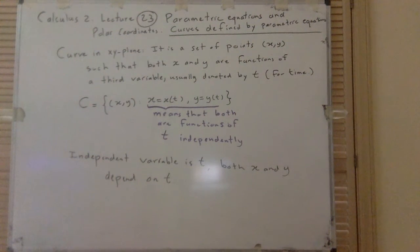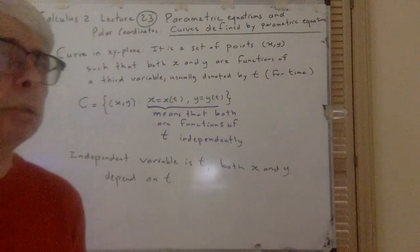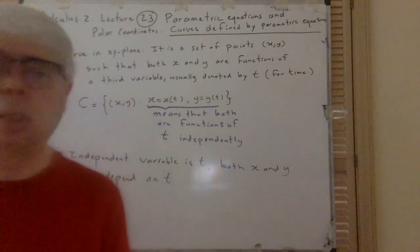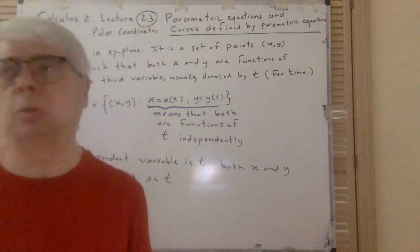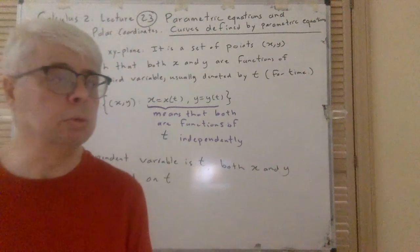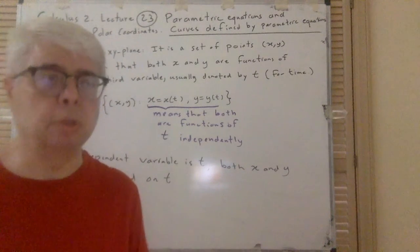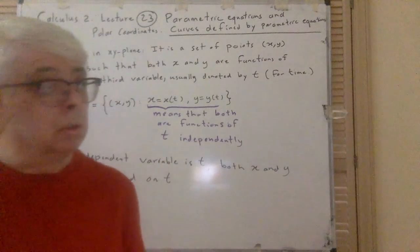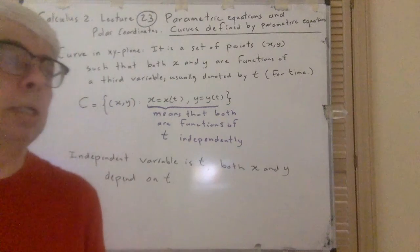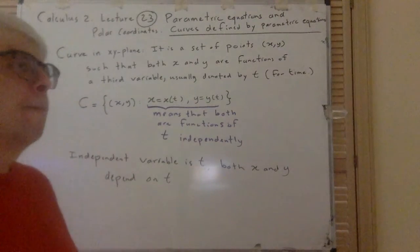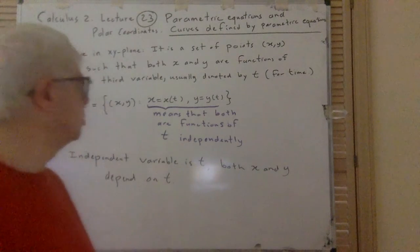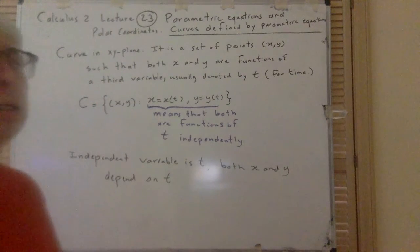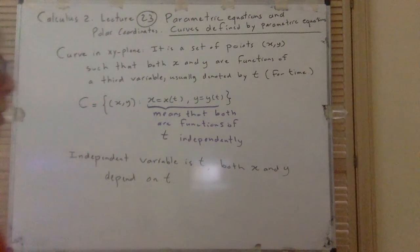CAP 2 lecture 23: parametric equations and polar coordinates. The first section is curves defined by parametric equations. Until now, when we talked about curves — even from college algebra — everybody has some idea. You could draw a circle, for example. But we really did not define a curve rigorously. At this point we can. A curve in the XY plane — in fact a curve in any space — has a similar definition.